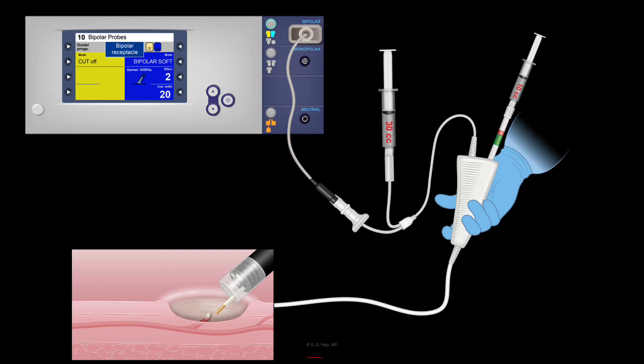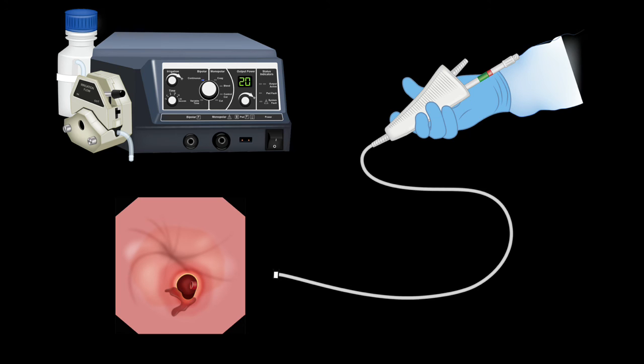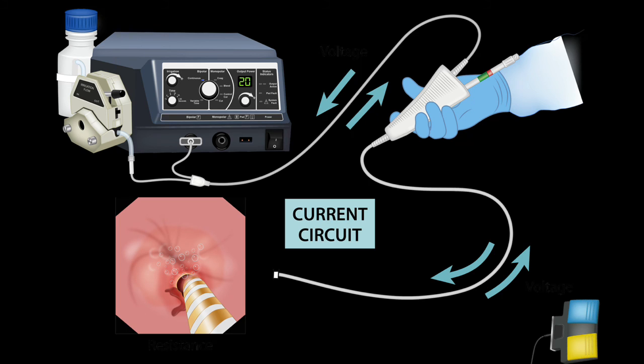In addition to using this bipolar device with the ERBE machine, the bipolar device can be used with a Boston Scientific unit device that has not only a bipolar outlet but also an outlet for water irrigation as you can see here. And again you use the blue pedal to control the bleeding.